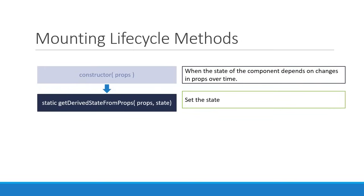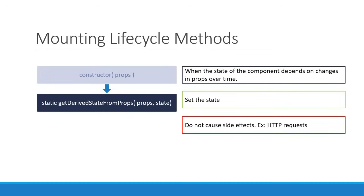Since this method is a static method, it does not have access to the this keyword, so you cannot call this.setState within it. Instead, you simply have to return an object that represents the new state of the component. Again, what you shouldn't do is cause side effects — for example, fetching data from an endpoint. So getDerivedStateFromProps: use it when state depends on changes in props over time, and do not cause any side effects.